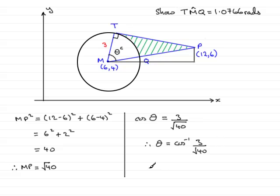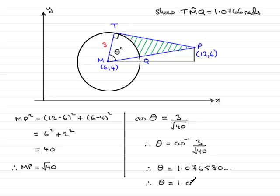If you do that, you should find that theta equals 1.076580 and so on. That means that to four decimal places as requested, theta will be 1.0766 radians. So, mark that in as radians to four decimal places. And that brings us to the end of this part of the question.